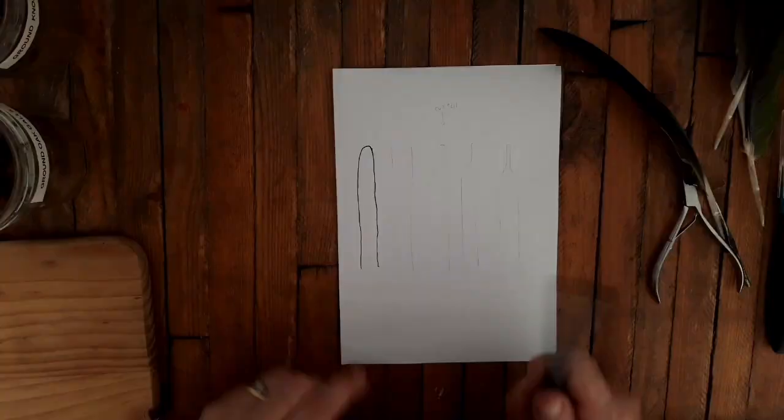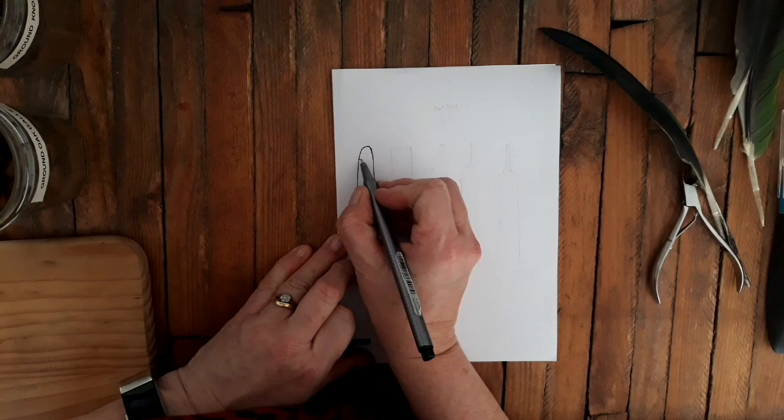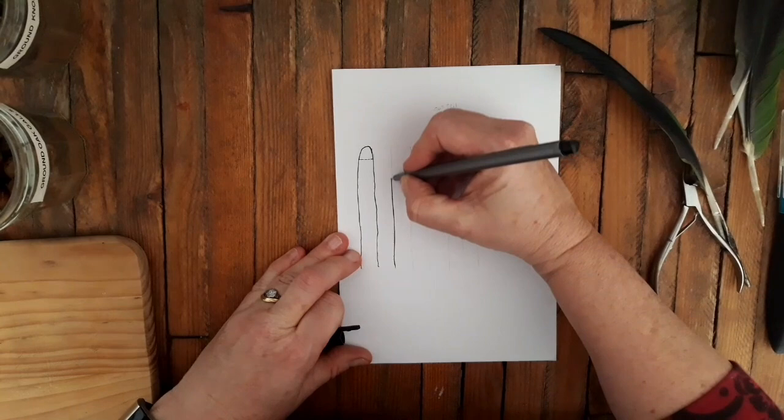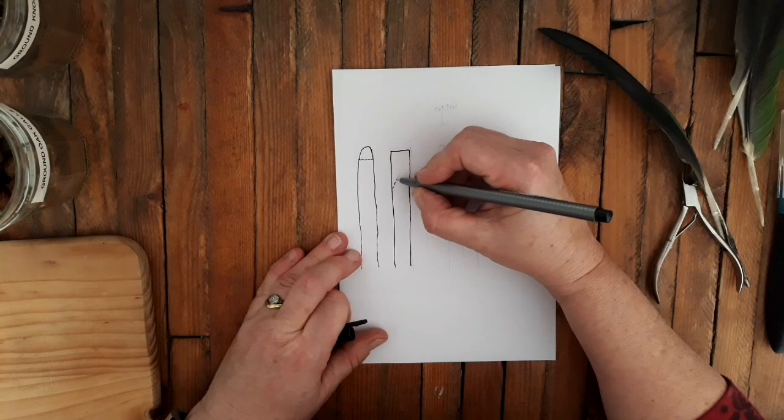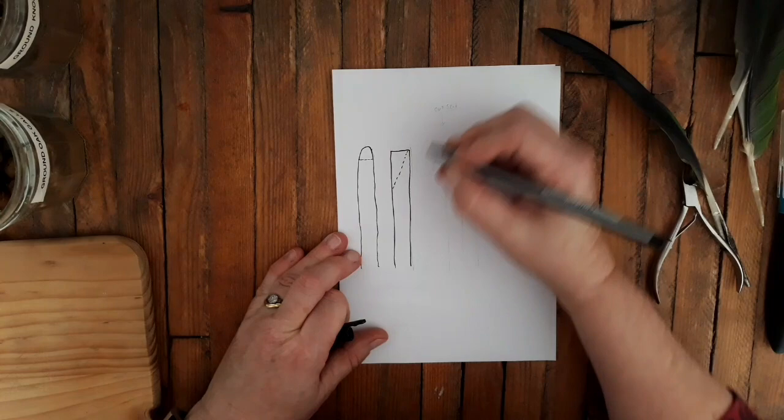So you start off with your feather like this, and then what you need to do is make a cut across the top. By doing that, you get a feather with a square blunted end. Then the next thing you need to do is cut about an inch back across and down through your feather, so you're cutting a wedge out of it.